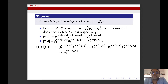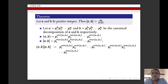We will prove this. Let a = P₁^A₁ · P₂^A₂ · … · Pₙ^Aₙ and b = P₁^B₁ · P₂^B₂ · … · Pₙ^Bₙ be the canonical decompositions. By definition, the GCD of ab is P₁^min(A₁,B₁) · P₂^min(A₂,B₂) · … · Pₙ^min(Aₙ,Bₙ), and the LCM is P₁^max(A₁,B₁) · P₂^max(A₂,B₂) · … · Pₙ^max(Aₙ,Bₙ).